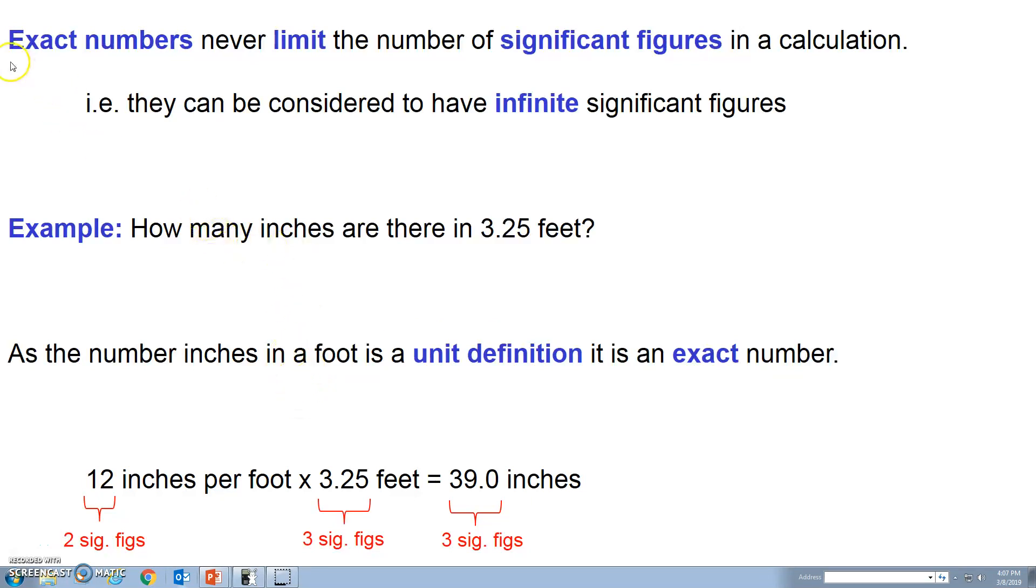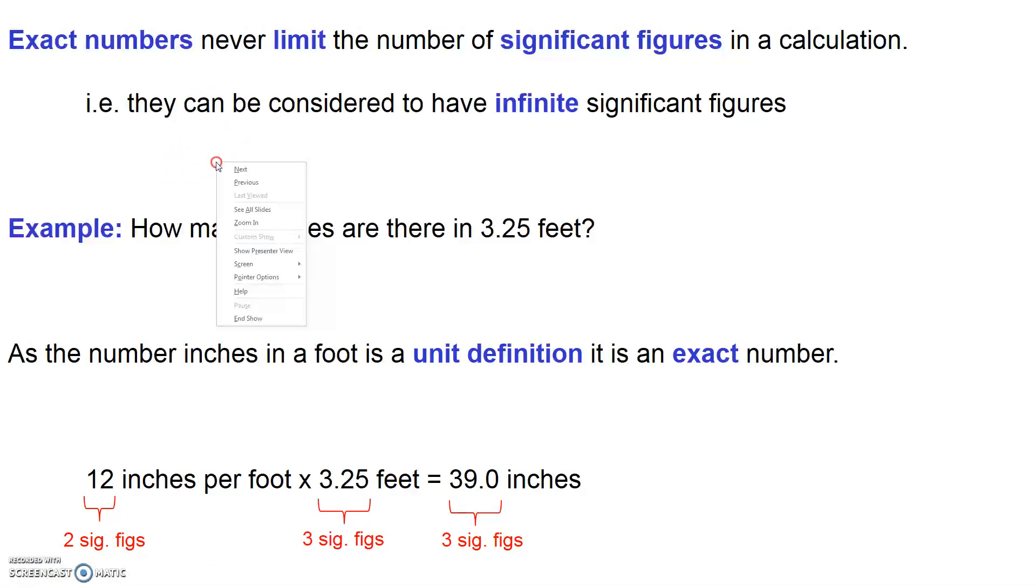We've been talking about the role that exact numbers might play in influencing significant figures in a calculation. We looked at the example where we have 12 inches in a foot, and recognize that this 12 does not actually have two significant figures, but rather it's more correctly considered to have infinity significant figures.